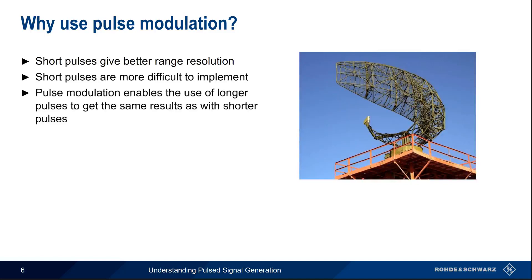By modulating the RF carrier during the pulse, we can use longer pulses to get the same performance as shorter pulses. This is why pulse modulation is sometimes also called pulse compression.